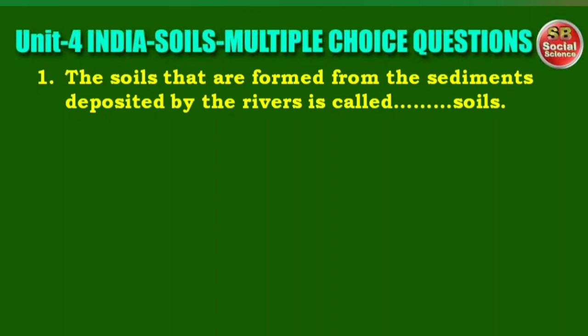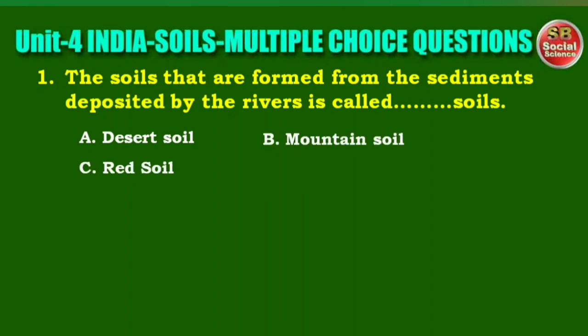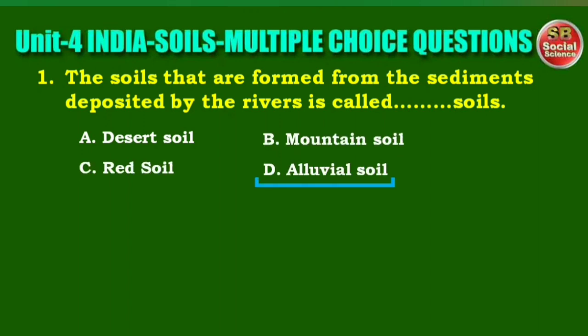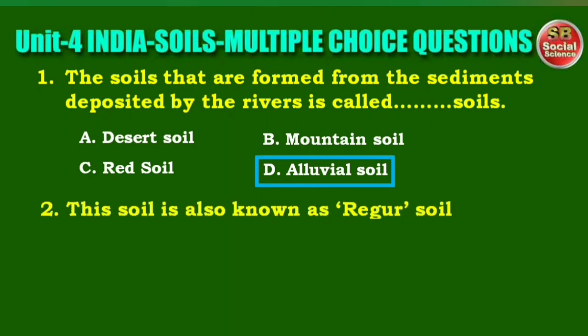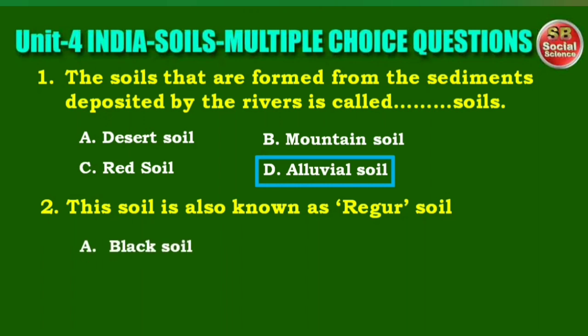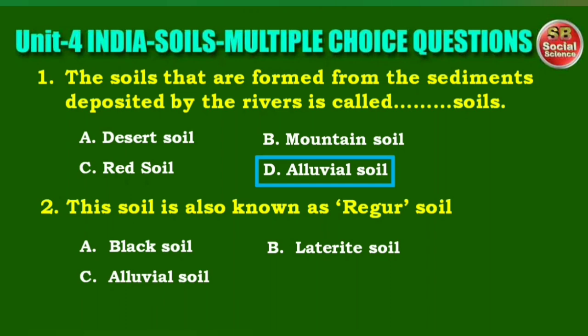First question: the soils that are formed from the sediments deposited by the rivers is called. Options are: desert soil, mountain soil, red soil, alluvial soil. The right answer is option D, alluvial soil.